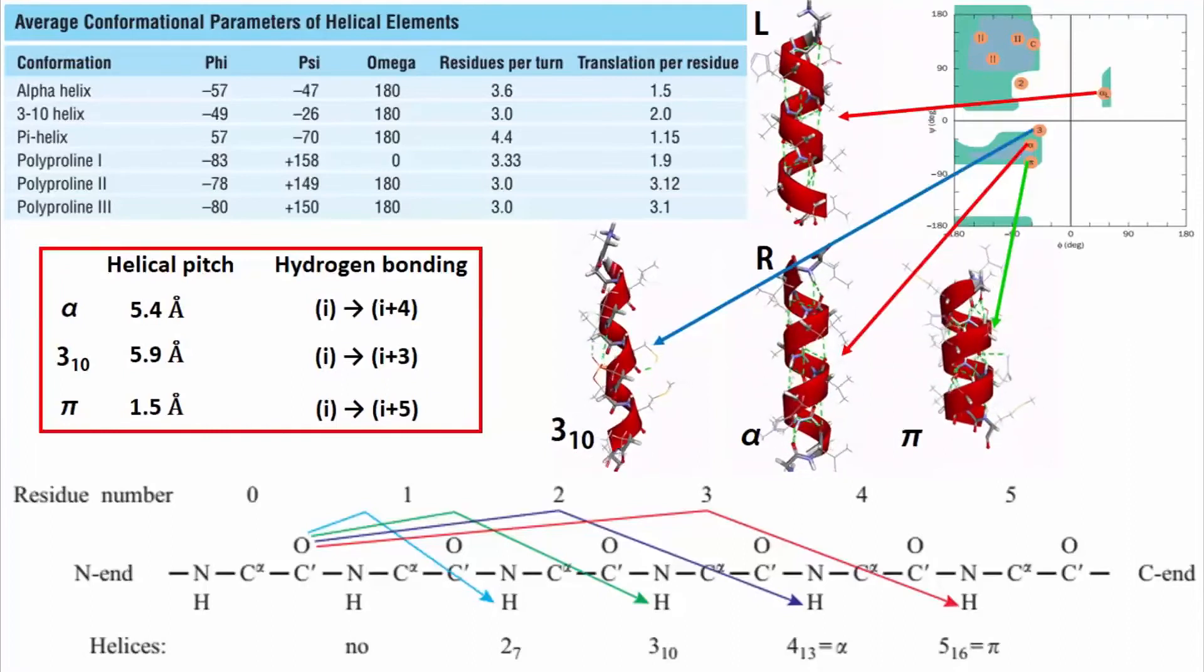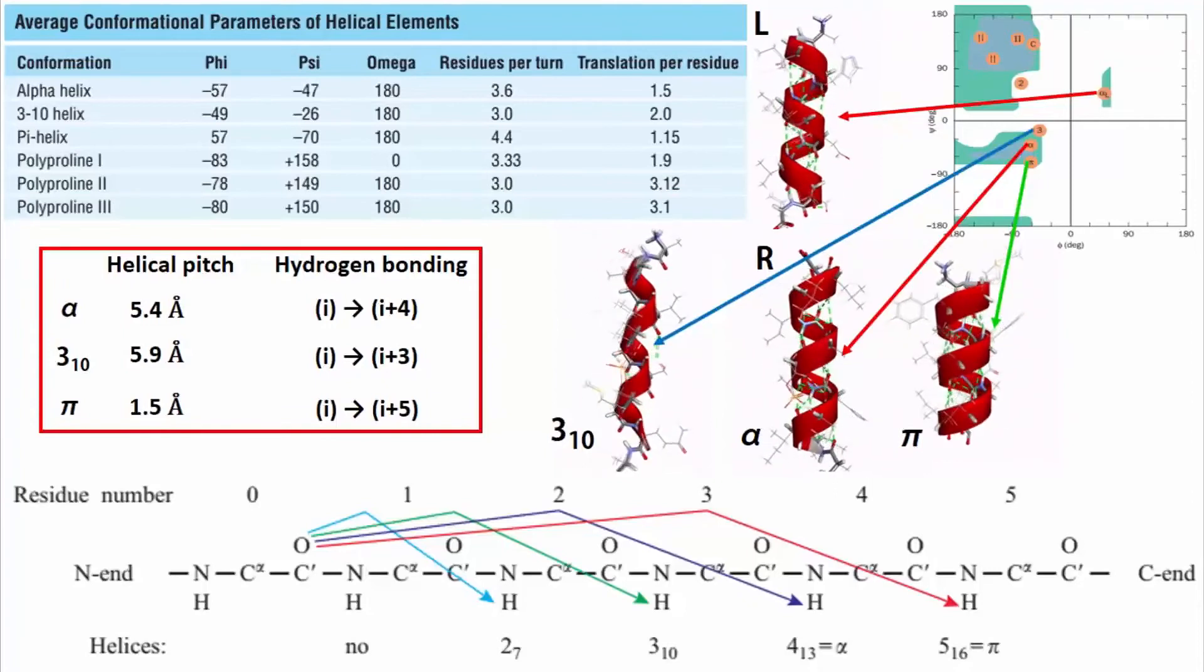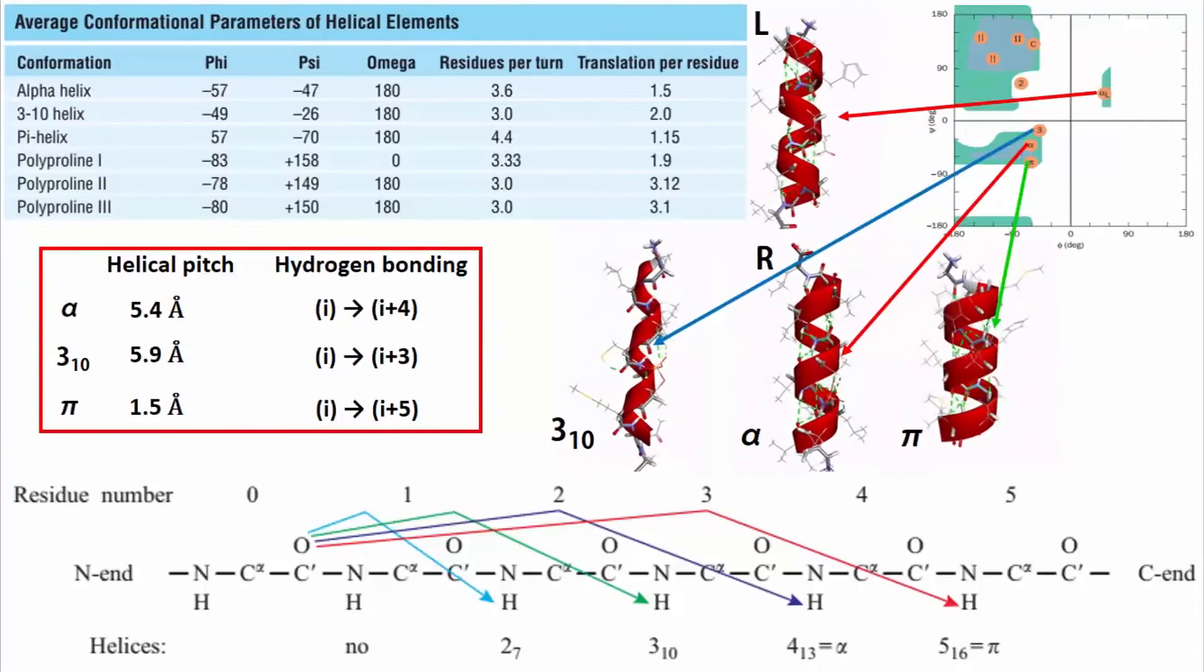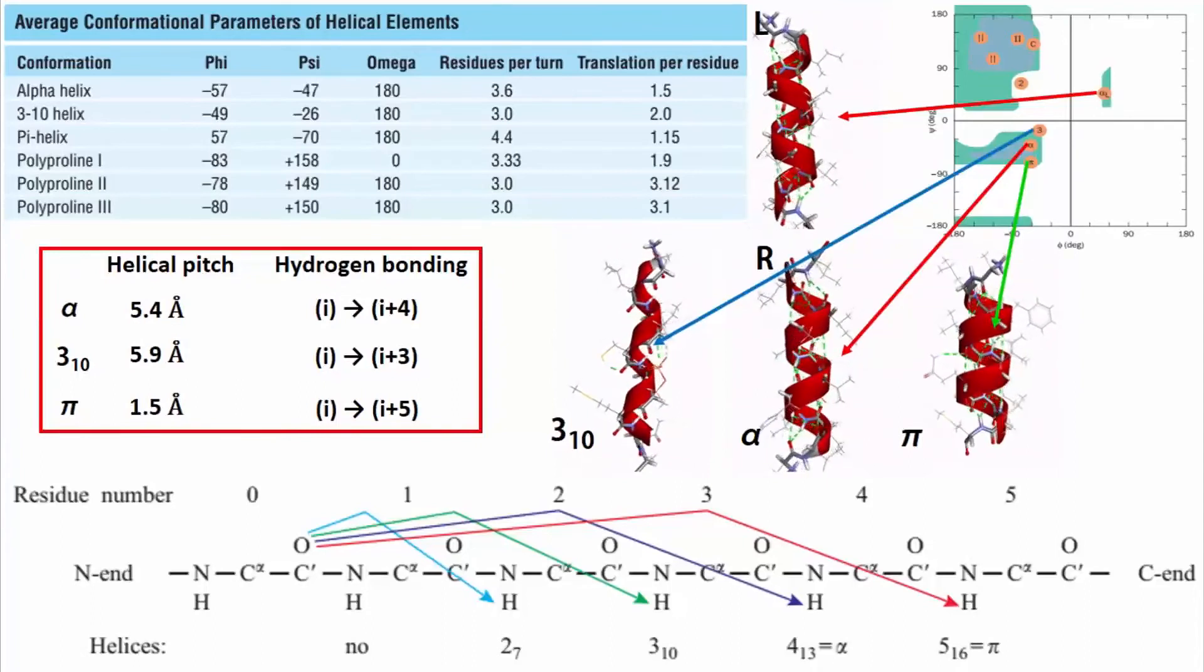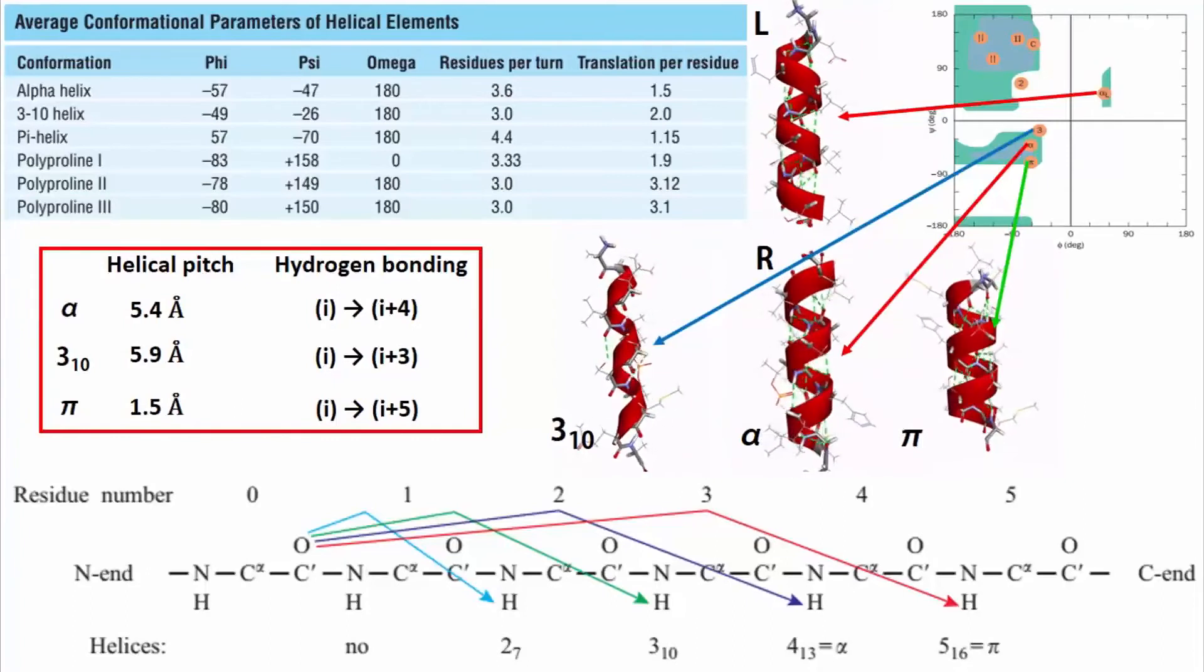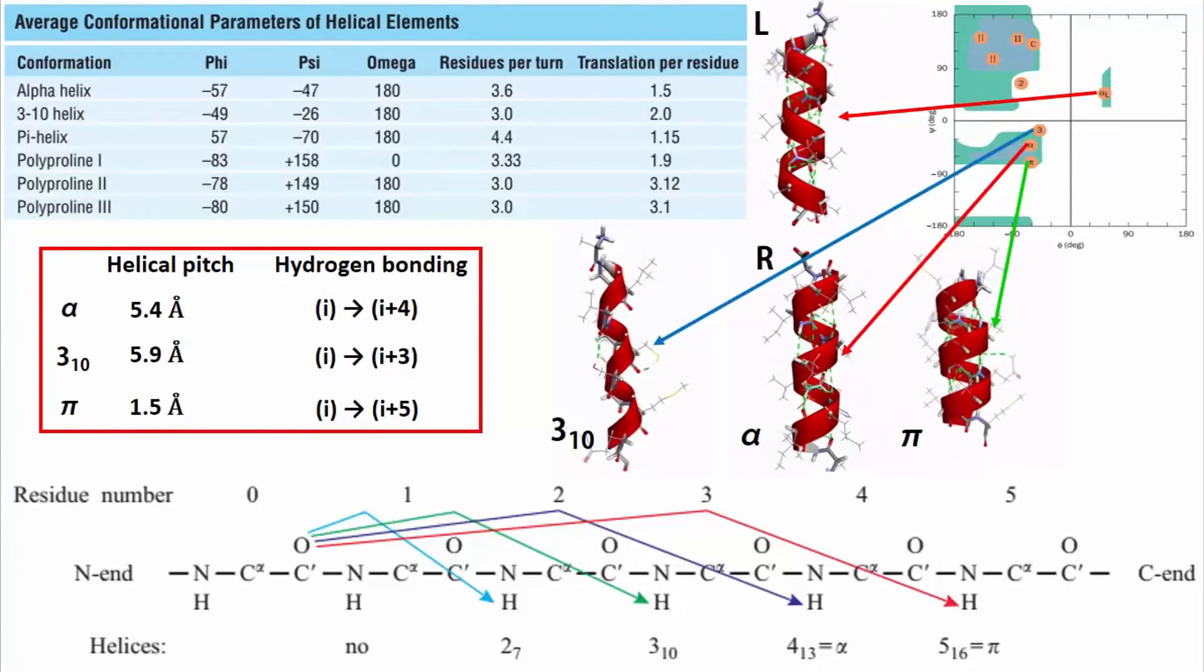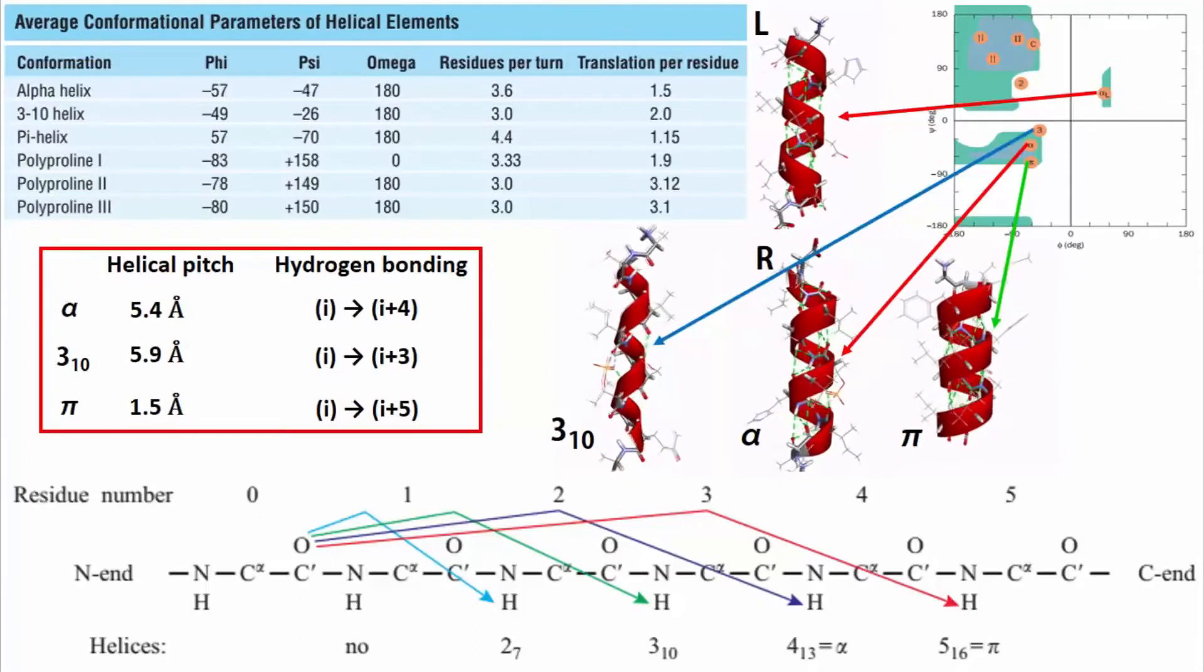See, in alpha helices, irrespective of being left or right-handed, every ith residue has a backbone hydrogen bond with the i plus fourth residue. For 310 helix, this is between i and i plus 3rd residue. For pi helix, it is between i and i plus fifth residue. If you just remember this, the rest is easy.